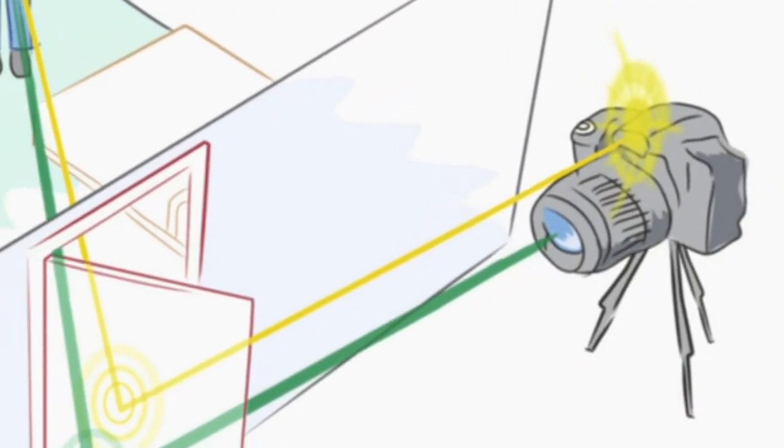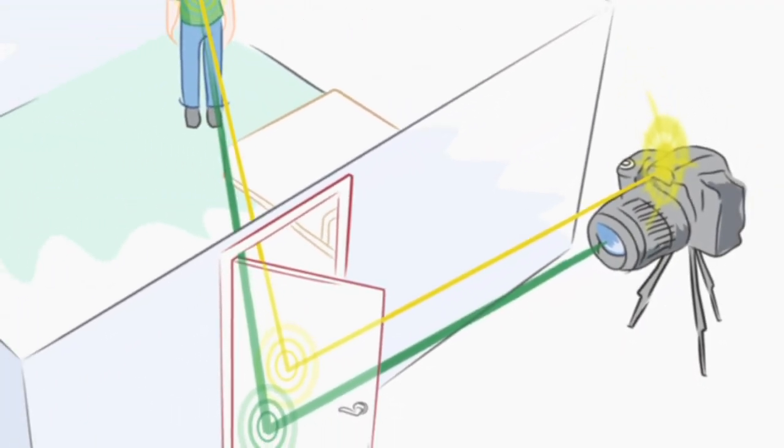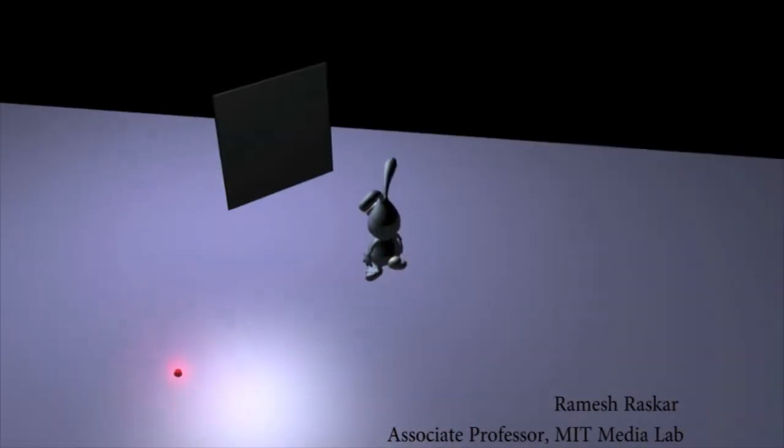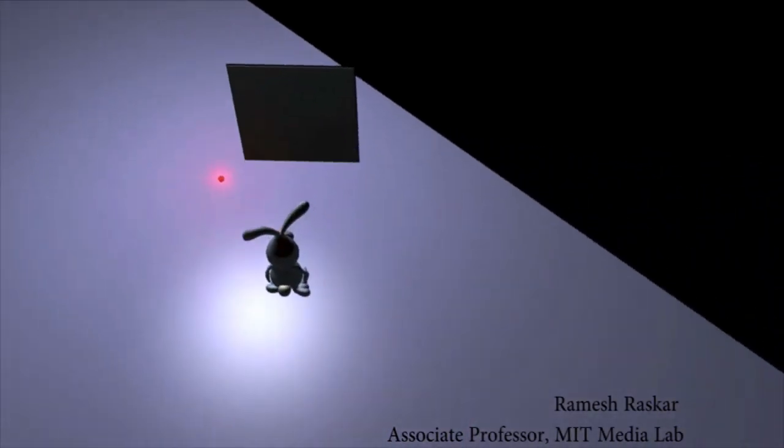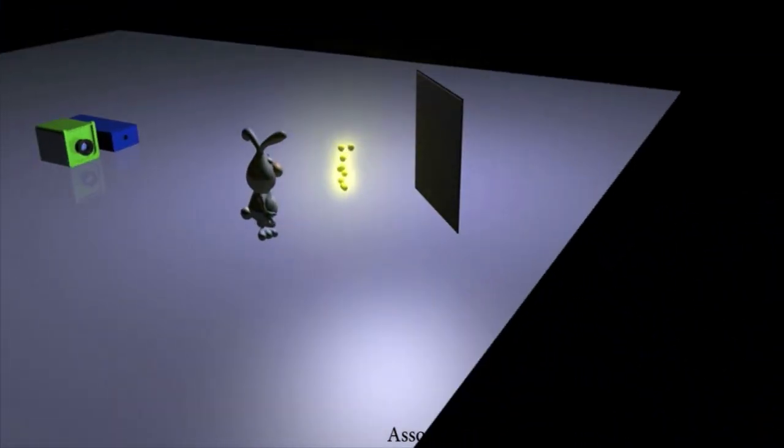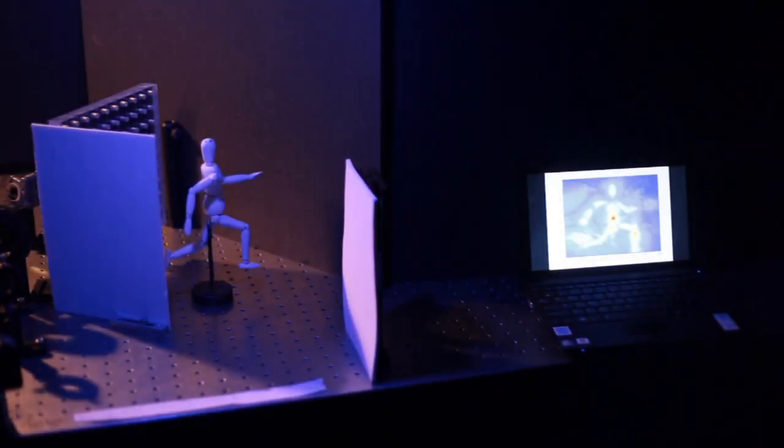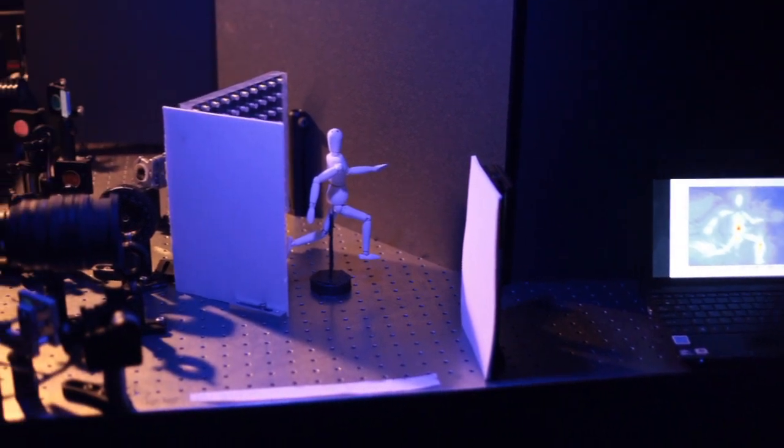We have built a camera that can take pictures around a corner. With an ultra fast flash and high-speed camera and new computational methods, our system can analyze scattered and reflected light. This way we can reconstruct images of objects that the camera never looked at.